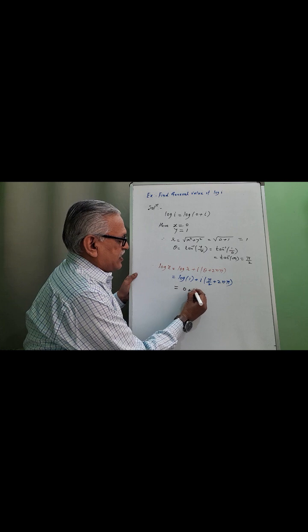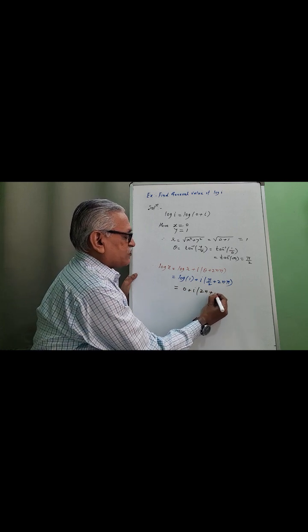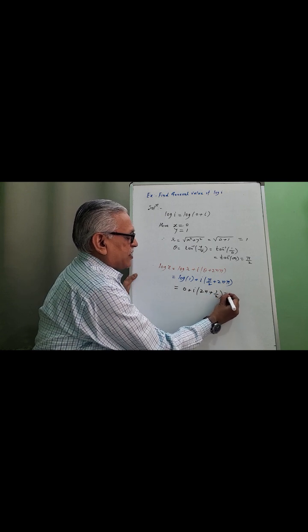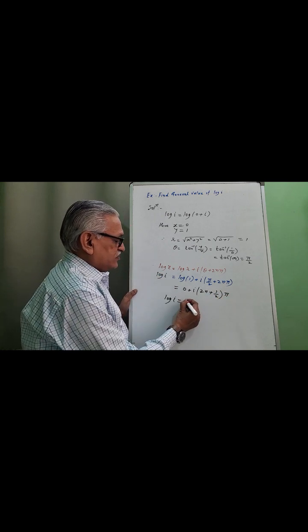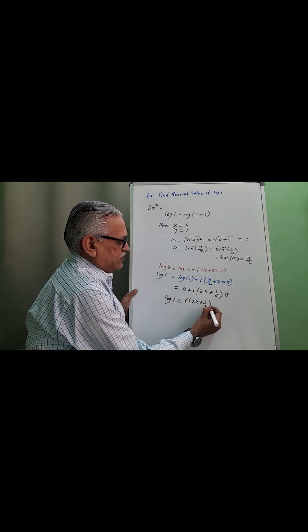i times... by taking common, we get (2n plus 1) by 2 times π, and that is i times (2n plus 1) by 2 times π.